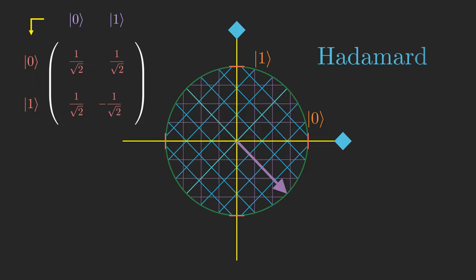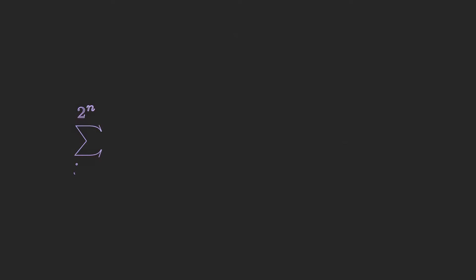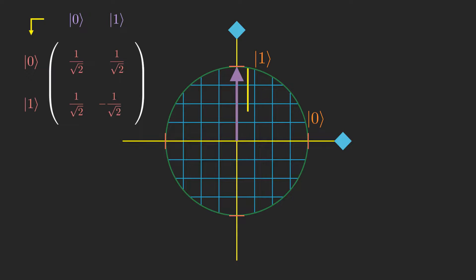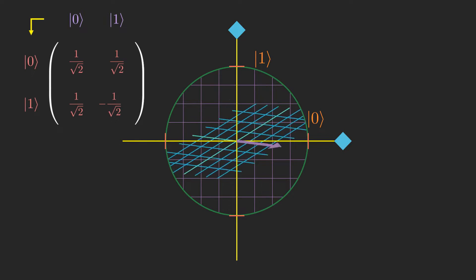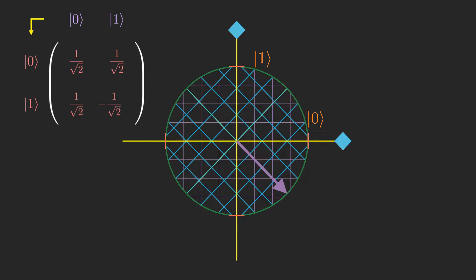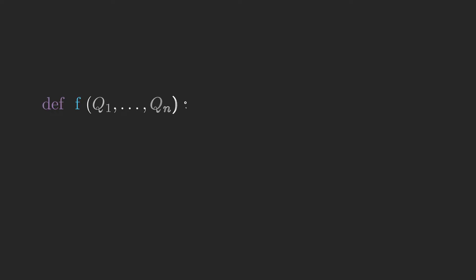If you remember from last time, the property of valid quantum instructions we learned was that if the sum of the squares of the amplitudes for the input state to a quantum instruction is 1, then the sum of the squares of the amplitudes for the output state is also 1. Now we have a nice way of reformulating that statement for vectors. If the input state is a unit vector, then the output state is also a unit vector. This property is actually exactly describing what is known as a unitary matrix. So every quantum instruction on n qubits corresponds to a 2 to the n by 2 to the n unitary matrix, and vice versa.